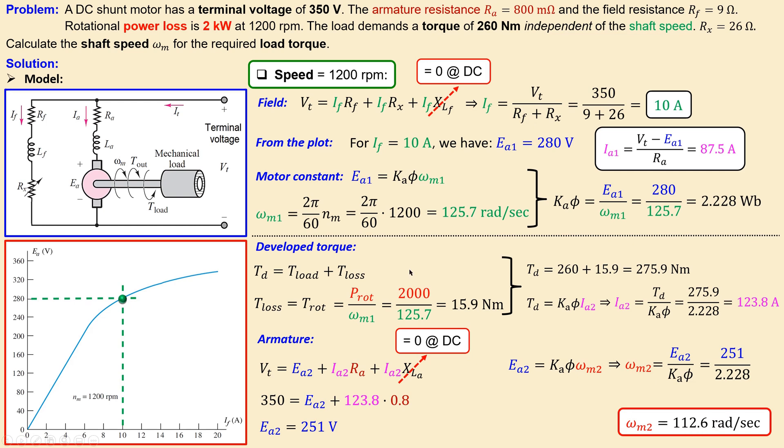This was our example number eight where we discussed what shaft speed we have for a required load torque of 260 newton meters. If you have any questions about this exercise please let me know. Don't forget to like and share this video so that we can reach more people. Thank you for your cooperation and see you next time in another interesting video.